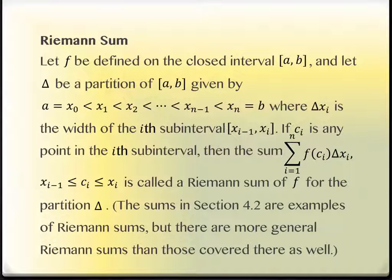Then the sum from i equal 1 to n of f of c sub i delta x sub i is called a Riemann sum of f for the partition delta. The sums that we did in section 4.2 are examples of Riemann sums, but they are very specific, pretty easy to work with examples. They're certainly not general examples.